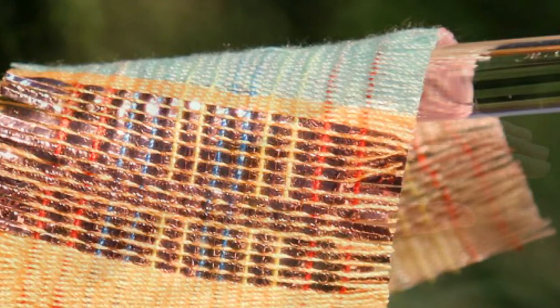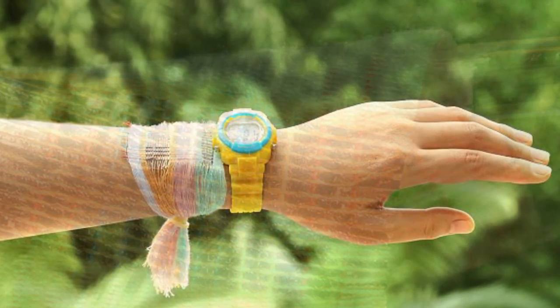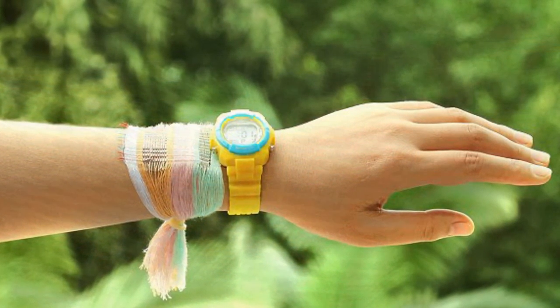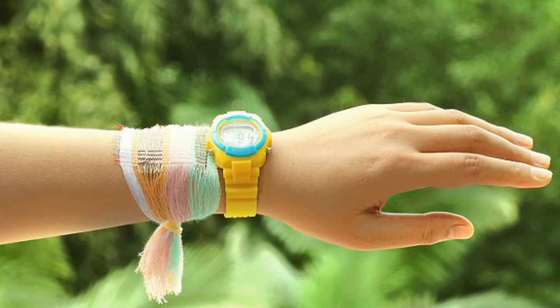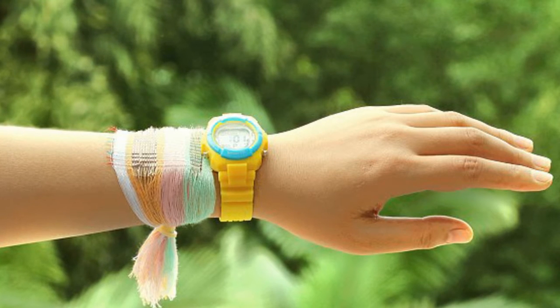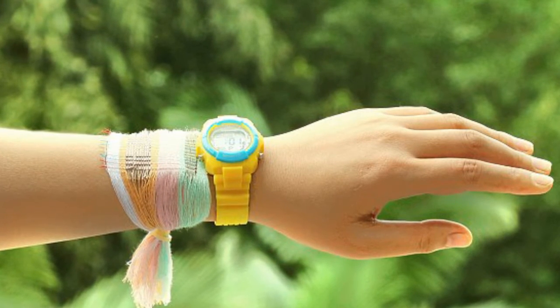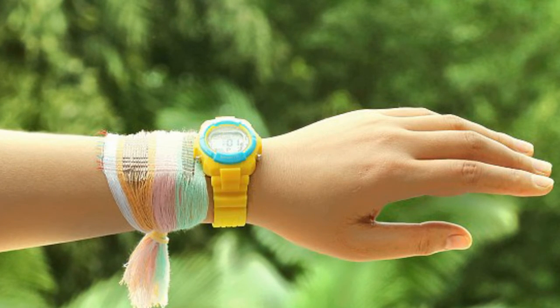To create the material, the researchers constructed solar cells from lightweight polymer fibers and wove these in with fiber-based triboelectric nanogenerators. These can generate electrical power from mechanical motion, including rotation, sliding, and vibration.